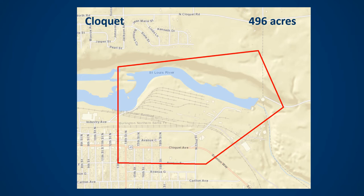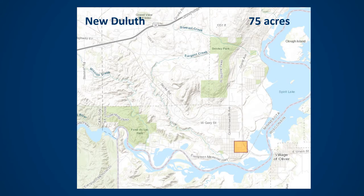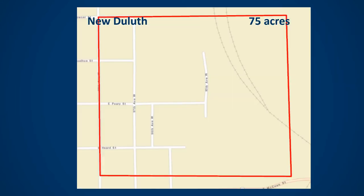Here again we show the zoomed in proposed area to be treated in the Cloquet Bay block at 496 acres. To give you a point of reference, here is the proposed area for New Duluth. This is zoomed out so you can see where this block is, as once zoomed in it is hard to identify exactly where we will be discussing. Here is the zoomed in area of New Duluth at approximately 75 acres.